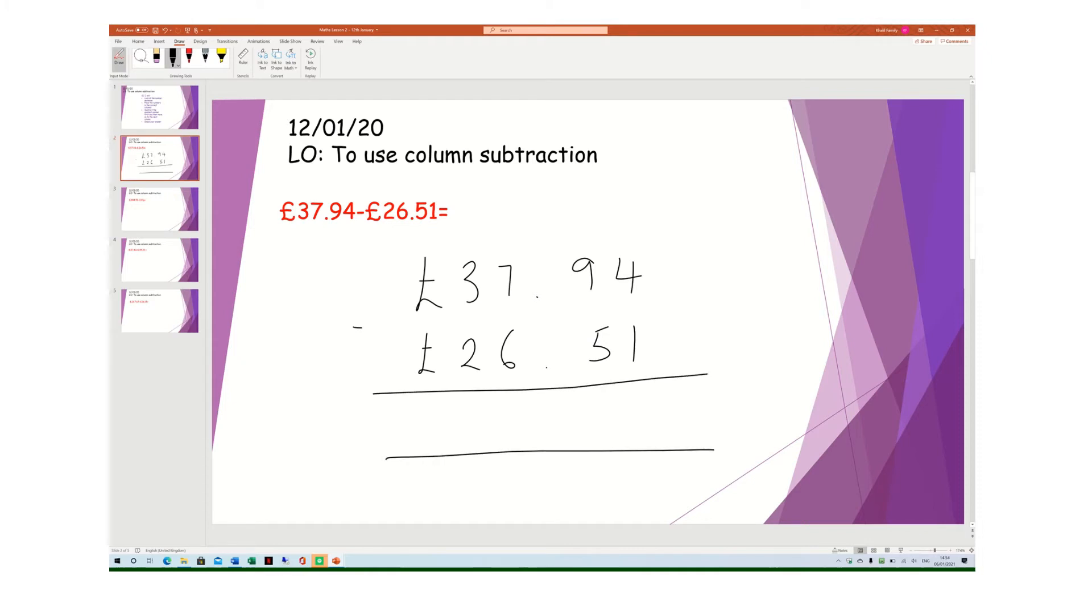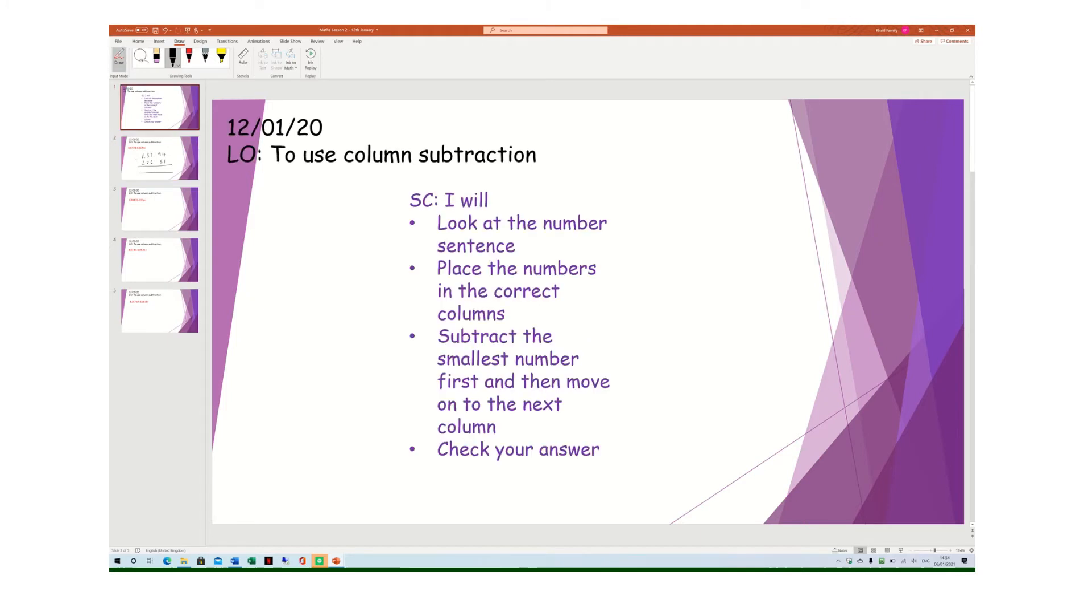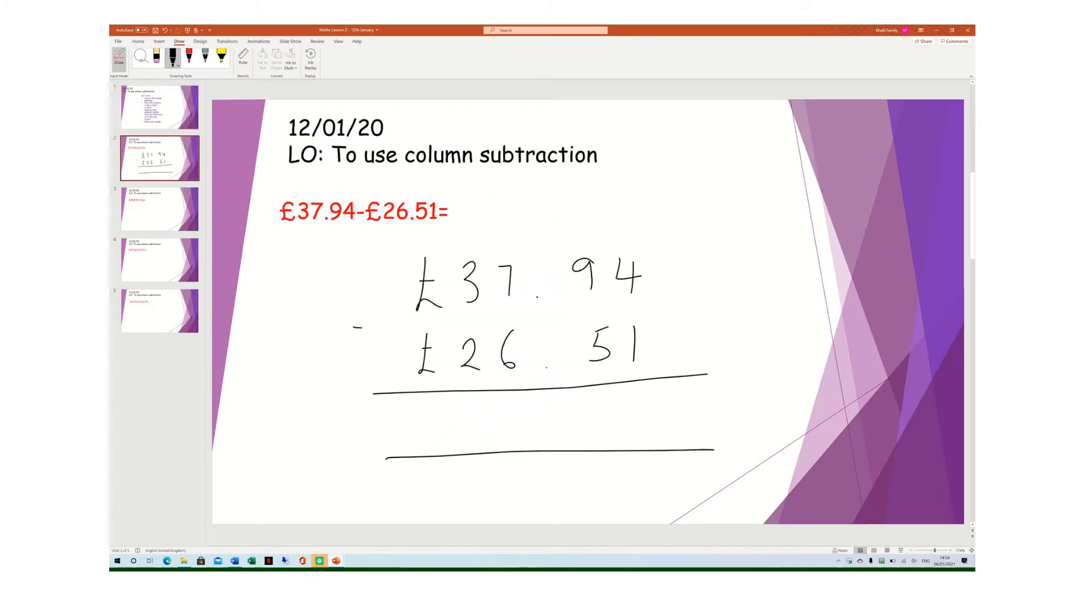All we need to do is go back to the success criteria. Once we place the numbers in the correct columns, we subtract the smallest number first. So in this case our smallest number is 4p and 1p. So 4 take away 1 is 3, 9 take away 5 is 4. Remember, the decimal place always remains in the same place, it does not move.